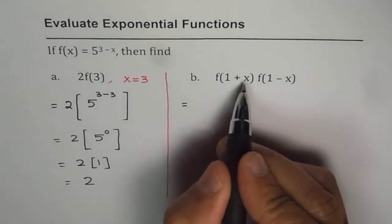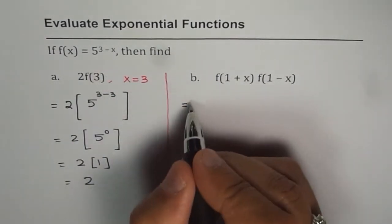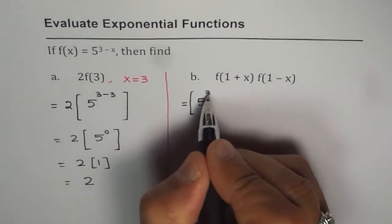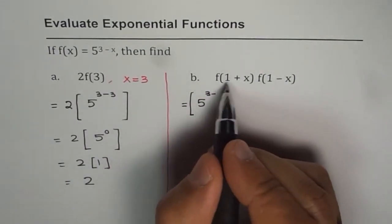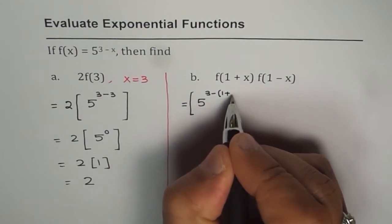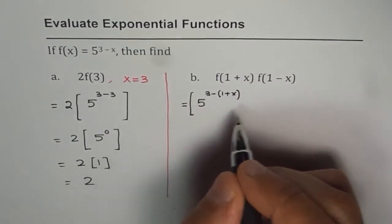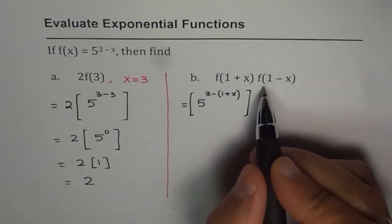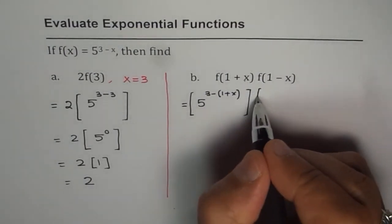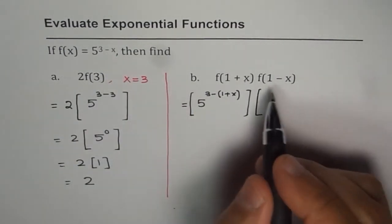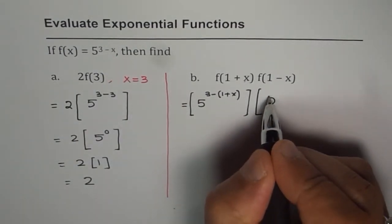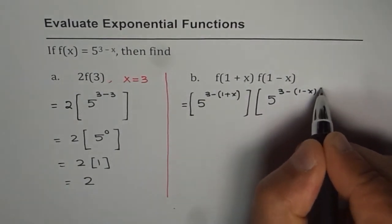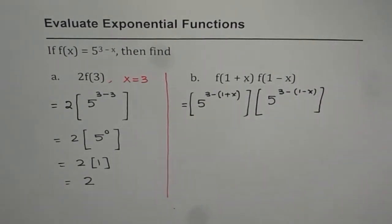So when we say f(1 + x), that means this function, let me put them in brackets. First function is 5 to the power of 3 minus, instead of x, I have to write 1 plus x. So this is f(1 + x). Now f(1 - x) will be replacing x with 1 minus x. So this is 5 to the power of 3 minus 1 minus x. And their product.